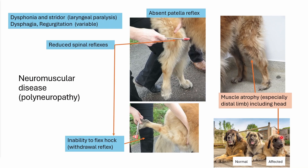This pronounced muscle atrophy also affected his head, which may be difficult to see if you're not used to Leonbergers. We have a couple of his friends here, including a much more normal male Leonberger for comparison. I must thank the owners of this wonderful dog for allowing me to use these videos.